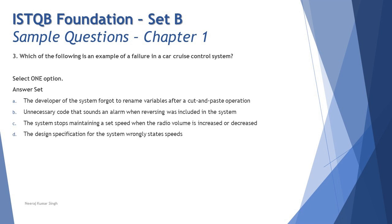Question three asks: which of the following is an example of a failure in a car cruise control system? This question comes from the definitions and differences between error, defect, and failure. A failure is identified when a test case actually fails in real-time execution. Option A — 'the developer forgot to rename a variable after a cut and paste operation' — is an error, telling us the root cause, not a failure visible to a user.